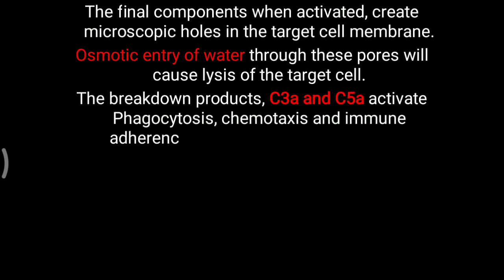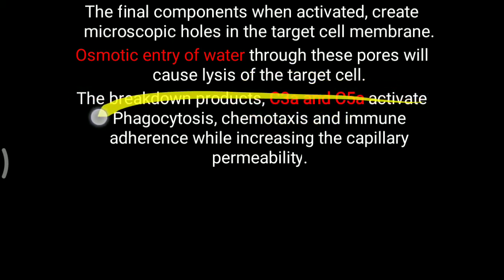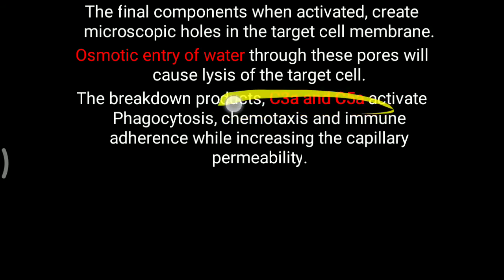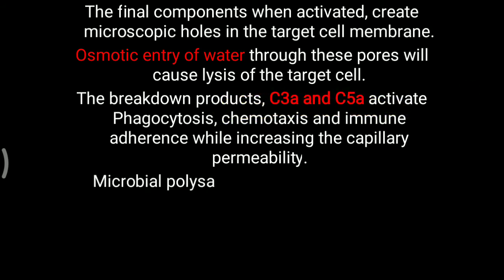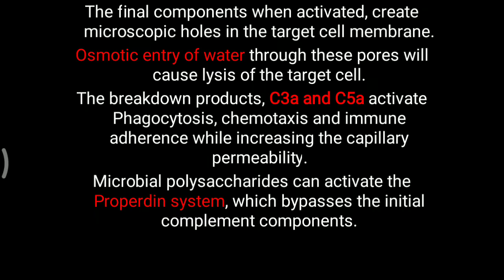The breakdown products when this cascade or complement system is working — C3A and C5A — activate phagocytosis, chemotaxis, and immune adherence while increasing capillary permeability. Microbial polysaccharides can activate the properdin system, which bypasses the initial complement components. There is another system called properdin, but here we will focus on the classical complement cascade pathway.